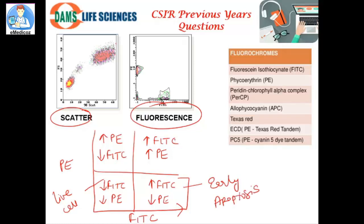When you have both high FITC and high PE, it means PI has moved into the cell through pores — this is late apoptosis. When FITC is low but PE is high, the cell is not undergoing apoptosis but PI has entered, which means the cell is undergoing necrosis.